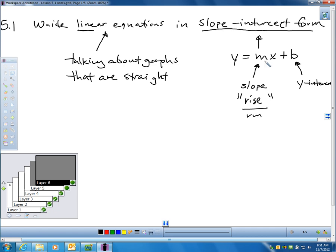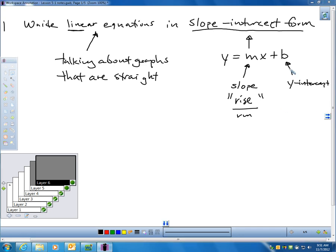Where M is the slope. Remember, slope represented rise over run on our graph. And B is the Y-intercept, which is where our graph crosses the Y-axis.